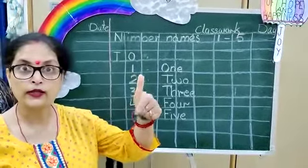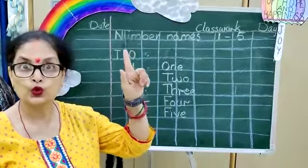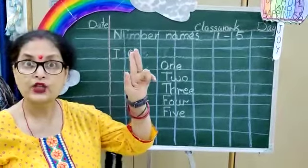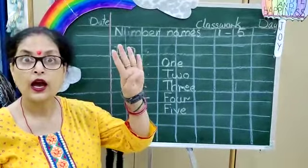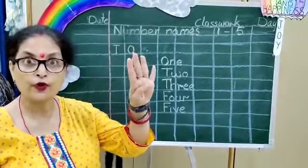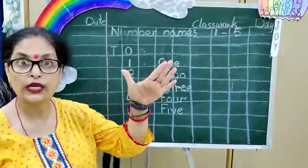Once again — O, N, E — 1. T, W, O — 2. T, H, R, E, E — 3. F, O, U, R — 4. F, I, V, E — 5.